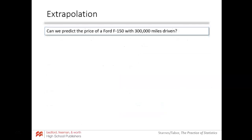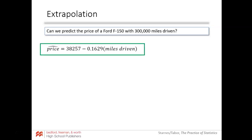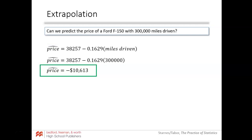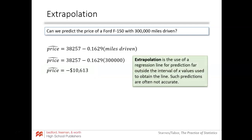Can we predict the price if the truck has been driven 300,000 miles? Mathematically, sure — we substitute 300,000 and get a predicted price of negative $10,613. That doesn't make logical sense. What's going on here is we've done what's called extrapolation, where we've used our regression line for a prediction much further out than the x values in our data. 300,000 miles is a very large amount, and the line is not a good predictor for trucks with that really high mileage.